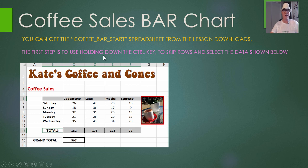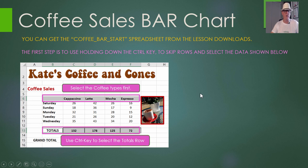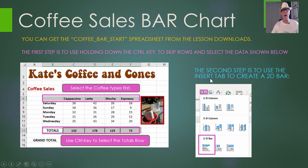The first step is to hold down the Control key to skip rows. Get your mouse and select the top row of data including that blank cell, then hold down the Control key and also select the weekly totals row at the bottom, so we've got just that data highlighted — skipping all the ones in between. It's all about using the left-hand CTRL key on your keyboard.